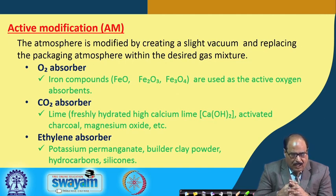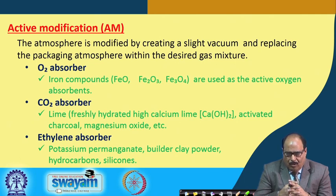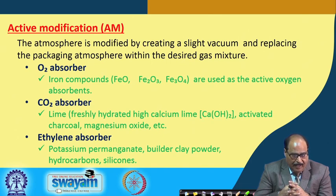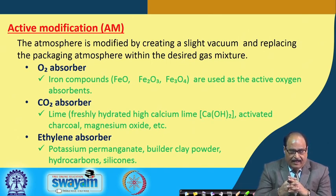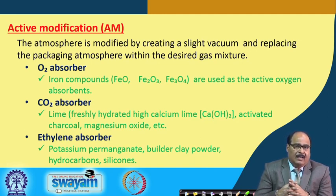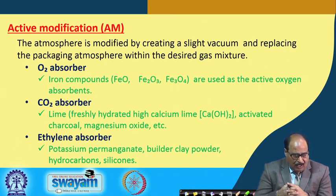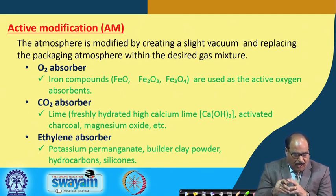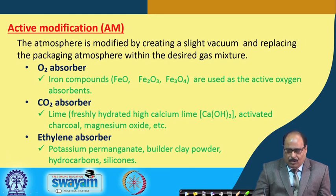Iron compounds such as FeO, Fe2O3, or Fe3O4 are used as active oxygen absorbers. Lime such as freshly hydrated high-calcium lime or calcium hydroxide, activated charcoal, and magnesium oxide are used as CO2 absorbers. Ethylene absorbers include potassium permanganate, builder's clay powder, hydrocarbons, and silicones.